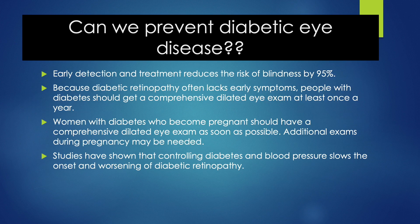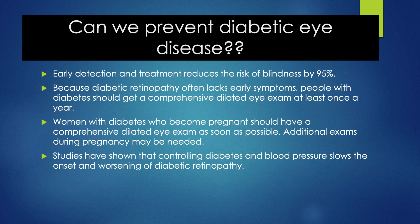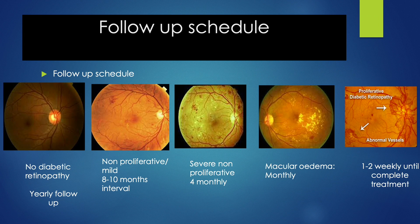Laser treatment is usually given in a few sessions and helps to reduce the risk of severe blindness. Can we prevent diabetic retinopathy? Good control of sugar and other medical conditions such as hypertension and hypercholesterolemia can delay the disease process. Often patients do not have any symptoms even in advanced eye disease, so regular monitoring and early screening is very important. Every stage of diabetic retinopathy has its own follow-up schedule which depends on severity.